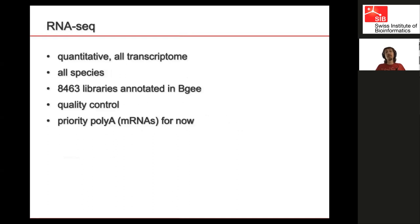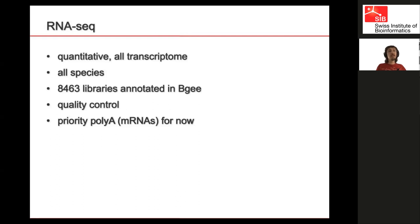The bulk of data nowadays is bulk RNA-seq. It's quantitative and can cover the whole transcriptome. Unlike microarrays, we don't need to design a species-specific one, so it's very easy to integrate new species — once you have a reference genome, RNA-seq will be of good quality. We have at present 8,400 libraries annotated, and increasing this is our main annotation effort right now. We do quality control, and although we can integrate different types of RNA-seq libraries, our current priority is polyA-selected ones targeting messenger RNAs — the gene expression of protein-coding genes. Specific libraries for short RNAs or long non-coding RNAs will probably be a future priority.